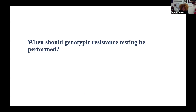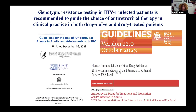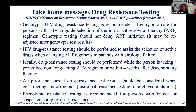Regarding when to perform genotypic resistance testing: all guidelines — American, IAS, DHHS, European, and Italian — recommend genotypic resistance testing for the choice of antiretroviral therapy in clinical practice, for both naive and drug-treated patients. Genotypic testing is recommended at entry into care for persons with HIV to guide selection of initial antiretroviral therapy, and it should not delay ART initiation. Even with test-and-treat approaches, treatment can be started and adjusted later based on results.